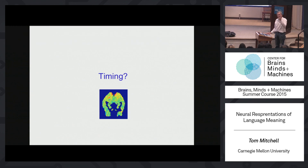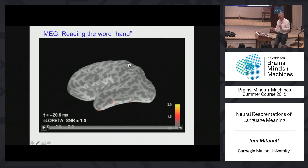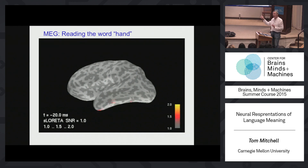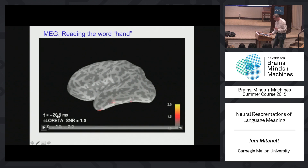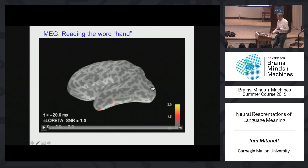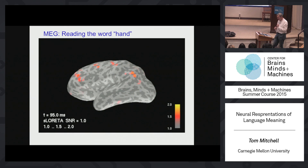Up till now we were looking at fMRI data, but here's some magnetoencephalography data. This data has a time resolution of one millisecond. I'll show you a movie beginning 20 milliseconds before a word appears on the screen — in this case, the word 'hand.' This brain is about to read the word 'hand.' You'll see 550 milliseconds of brain activity. It wasn't a static snapshot — your brain is doing a lot of things. There's a lot of dynamism during that 400 milliseconds that you're reading the word.